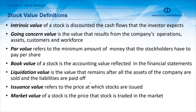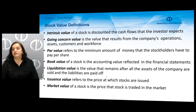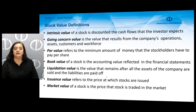The par value, or nominal value, refers to the minimum amount of money that the stockholders have to pay per share. The book value of a stock is the accounting value reflected in the financial statements. The shareholders' equity represents the value of the stockholders, and therefore we refer to this as the book value. If we divide this by the number of shares outstanding, we can easily compute the book value of a share of stock.